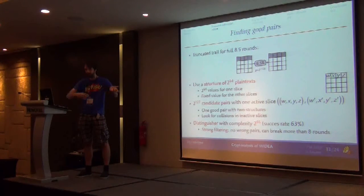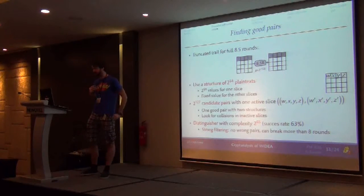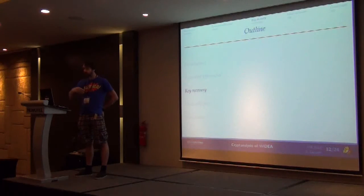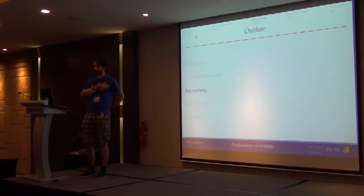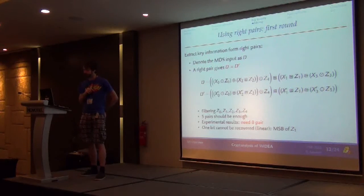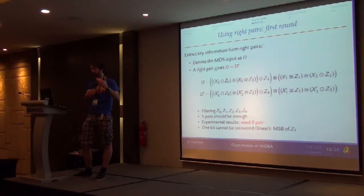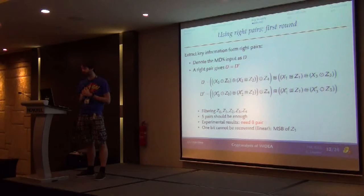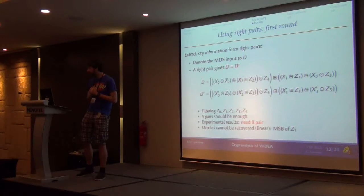Because the probability is pretty high, you have very strong filtering and you will not add wrong pairs. As soon as you get one pair, you can safely assume it's following the trail. That's a distinguisher. Now can we do something more? Of course, what we want from a block cipher attack is key recovery. So we extend this to a key recovery attack. We try to extract information directly from the right pair from the differential, without using partial decryption because that would increase the complexity — we just take the right pairs and extract key information from them.